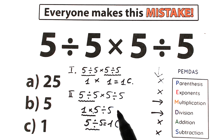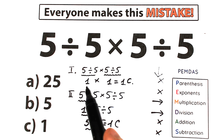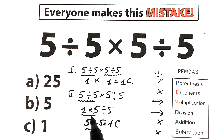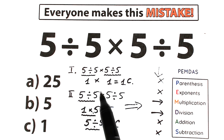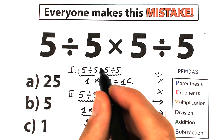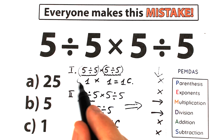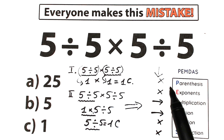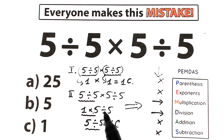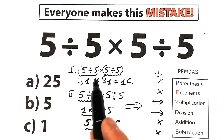An important moment: both solutions give the same answer — Option C — but with completely different methods. If you write this in an exam or a math test, you should choose the correct solution. The second interpretation using order of operations is the correct one. The first interpretation is only valid if you add parentheses — because parentheses have the highest priority and allow you to jump around. Without parentheses, you must use left-to-right order.